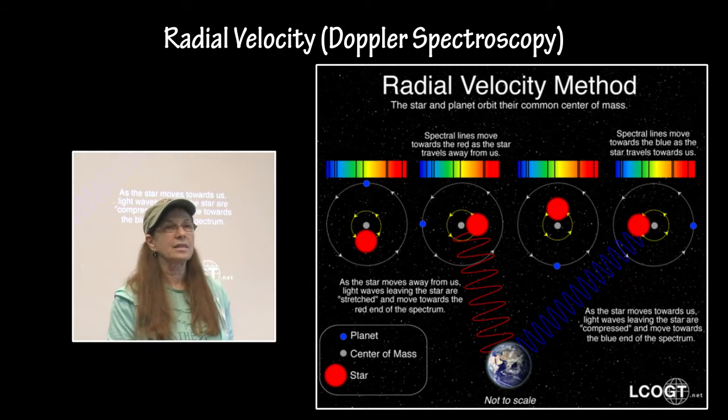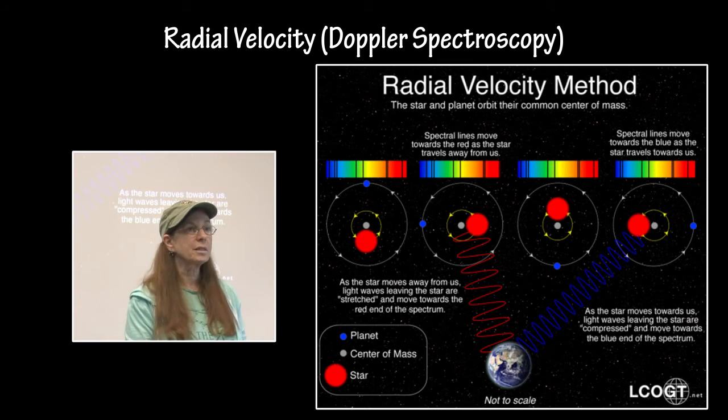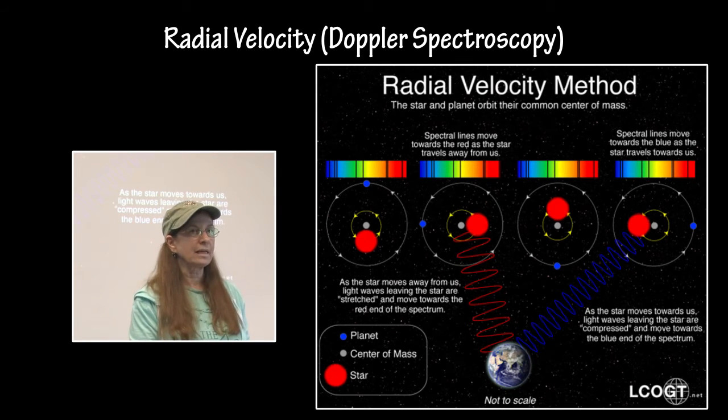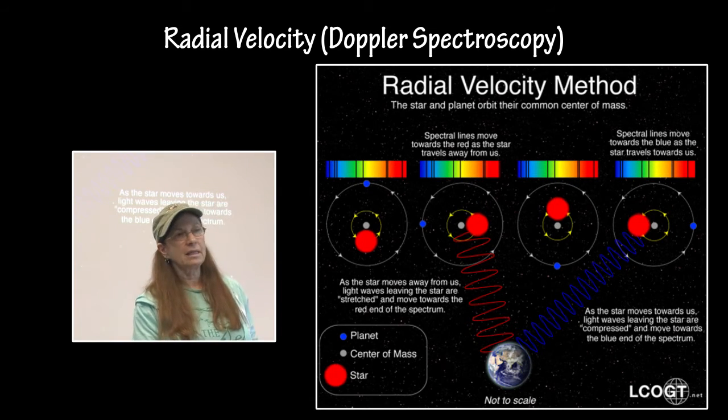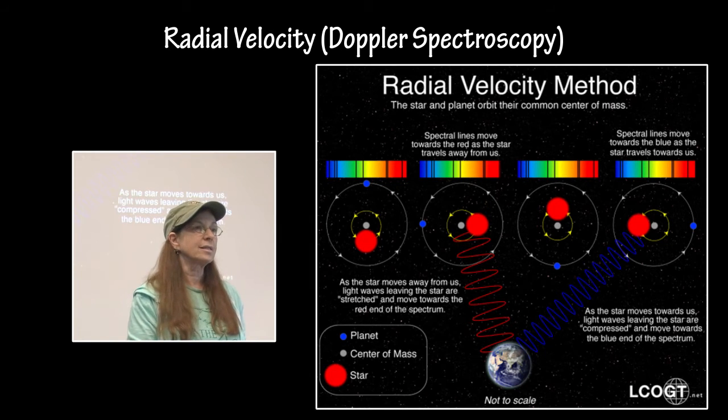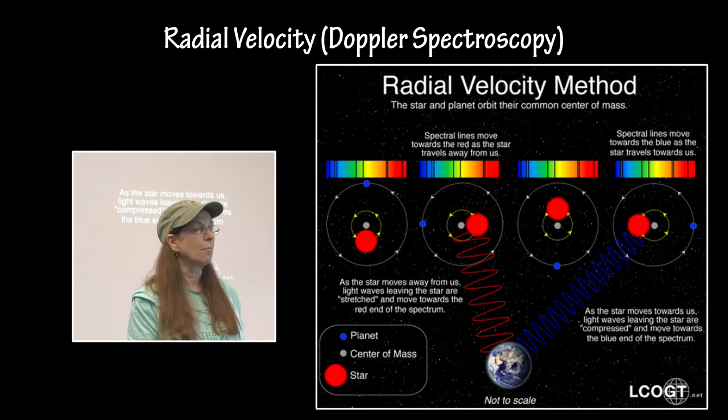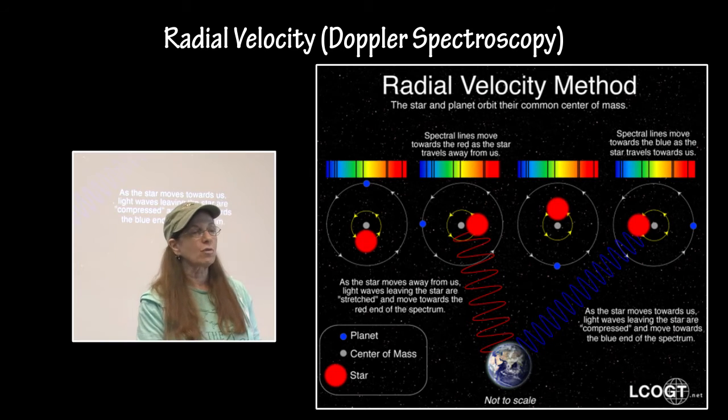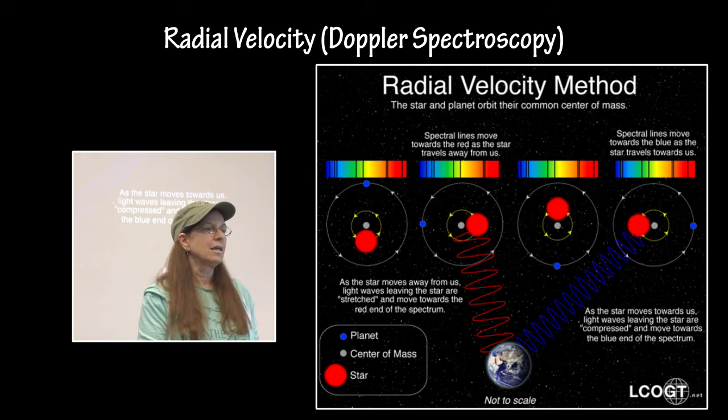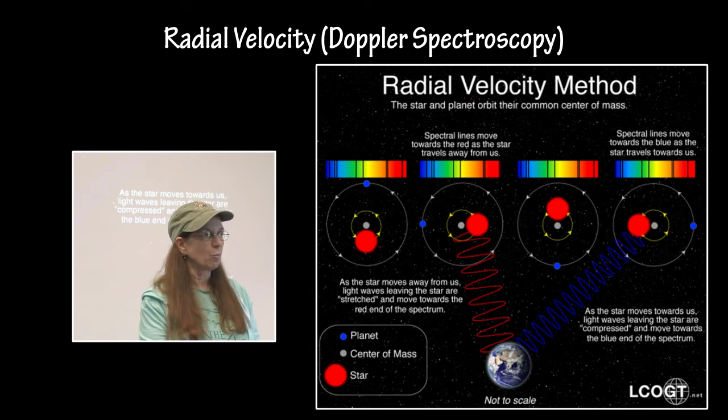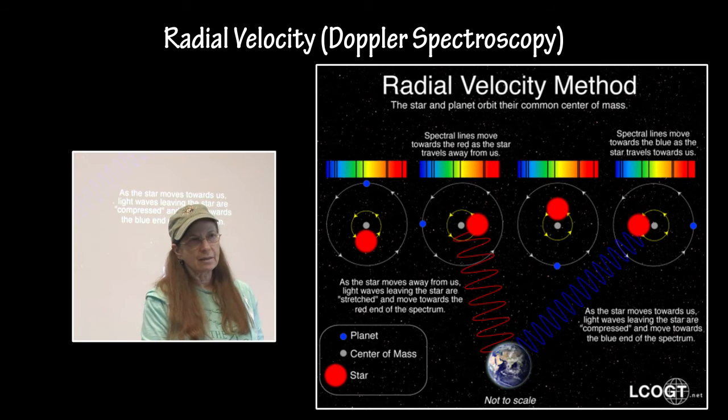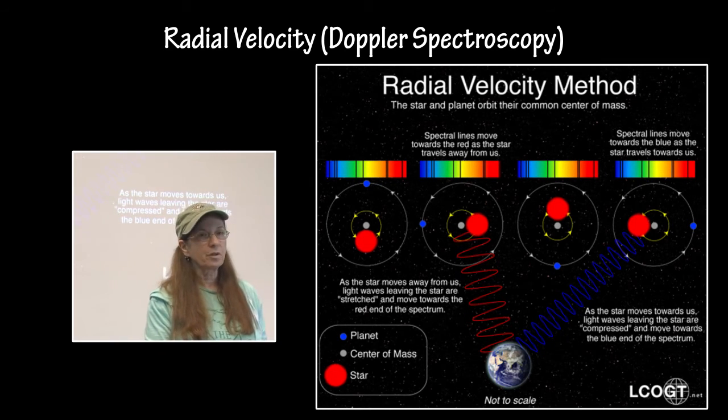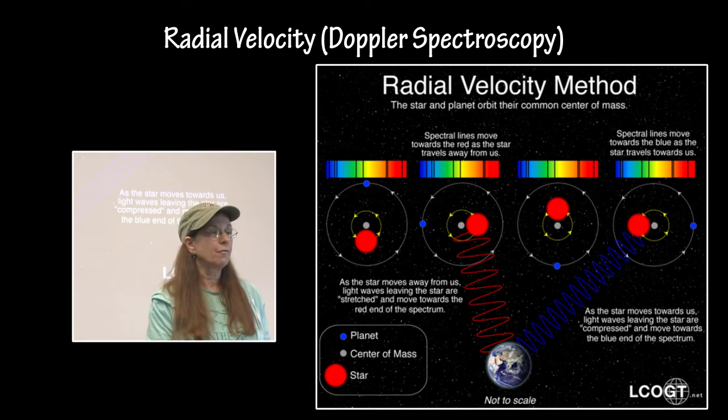Radial velocity, the Doppler spectroscopy, depends on the fact that a planet and a star are actually orbiting their center of mass, which is in the interior of the star itself, and that causes the star to wobble in its orbit. So when it is moving towards us, it is blue shifted, and when it is moving away from us, it is red shifted. We can look at the spectrum from this and look at the orbital motions and watch the shifting from red to blue in those emission lines, and that gives us a way to measure the mass and the orbital period of the system.